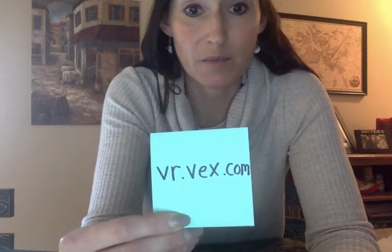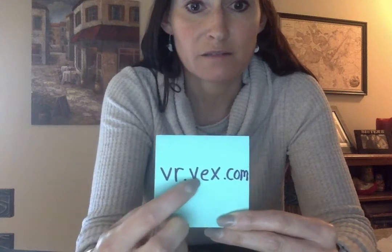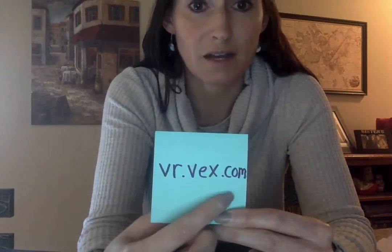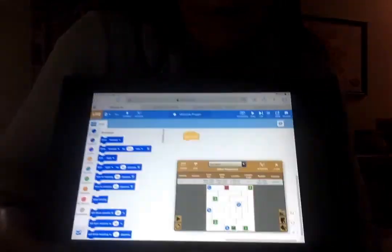So what you're going to want to do — you're going to need a device in order to do this. Just go to a regular search engine, like Safari or Chrome, and you're going to type into the search bar: vr.vex.com. That's going to bring you to this website here.